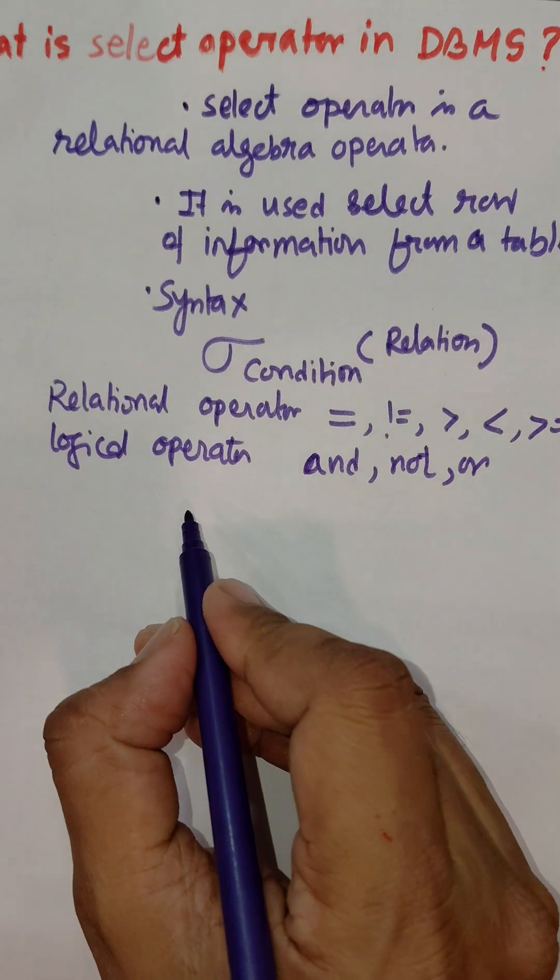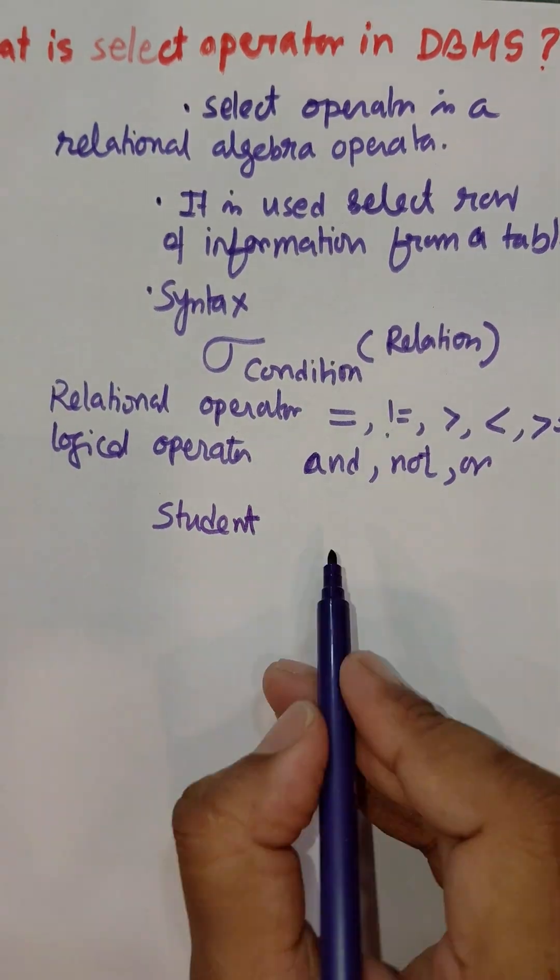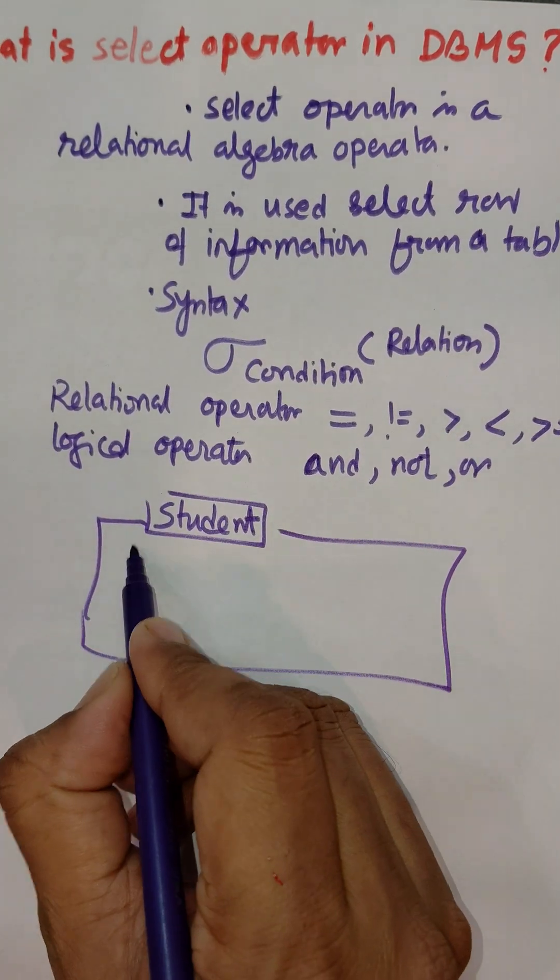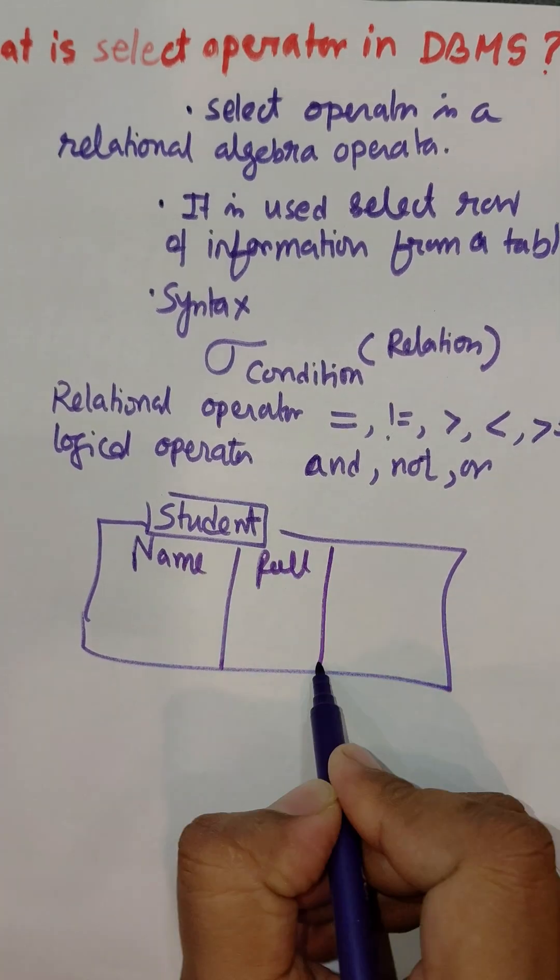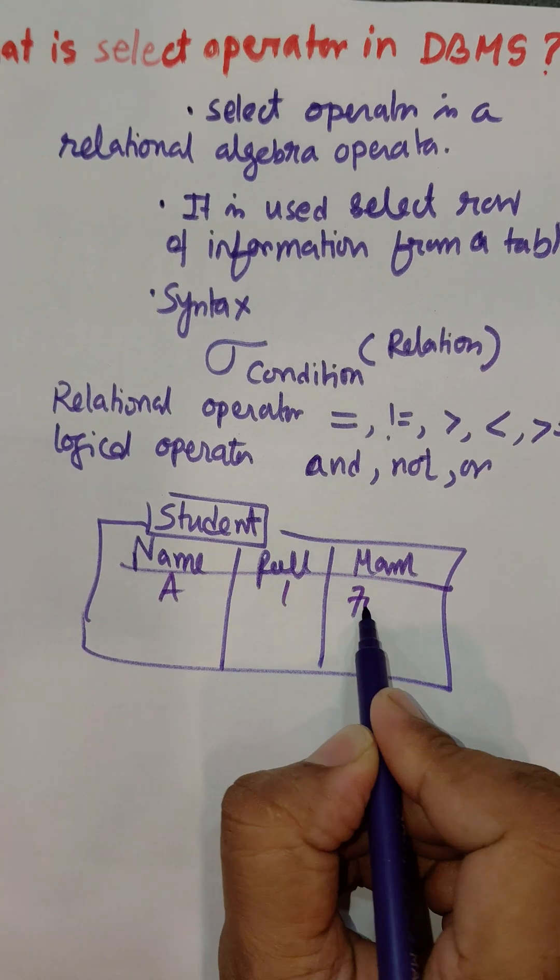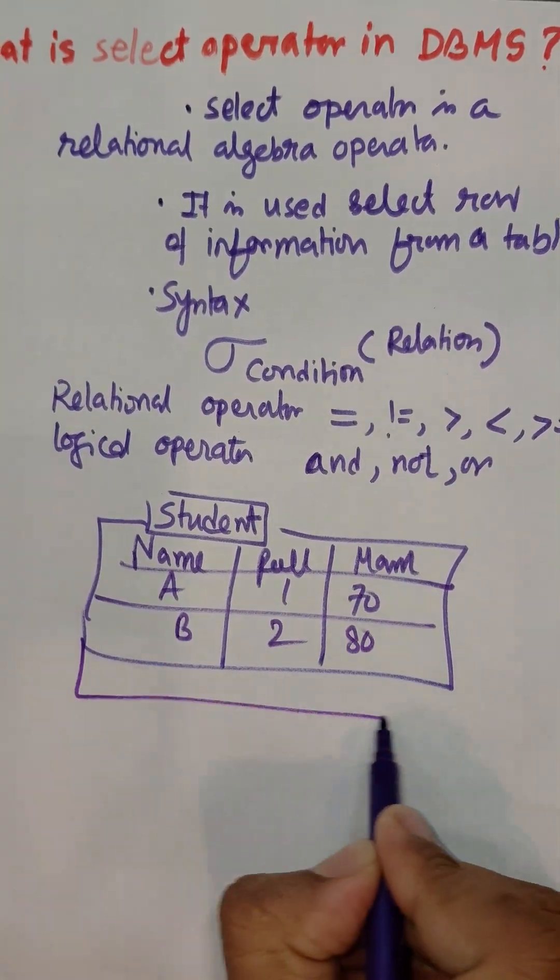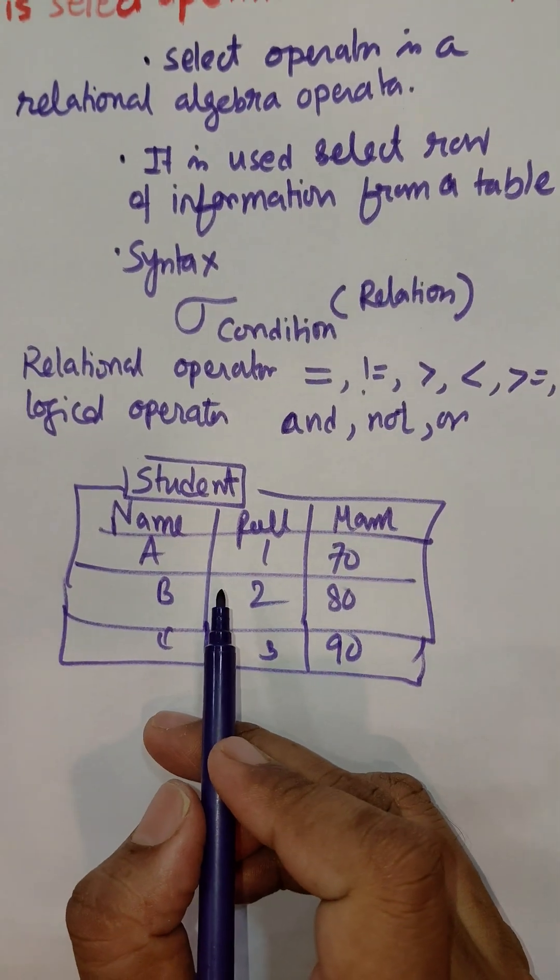Suppose there is a table named Student which consists of Name, Roll, and Marks. The information is: A, 1, 70; B, 2, 80; and C, 3, 90.